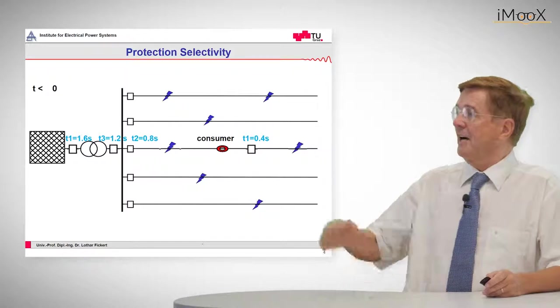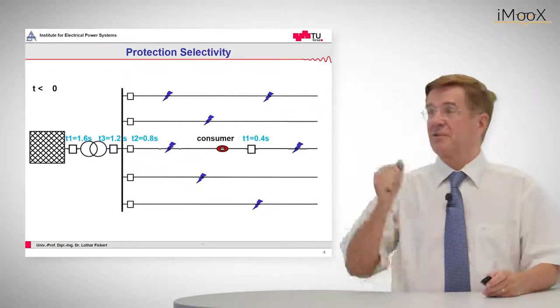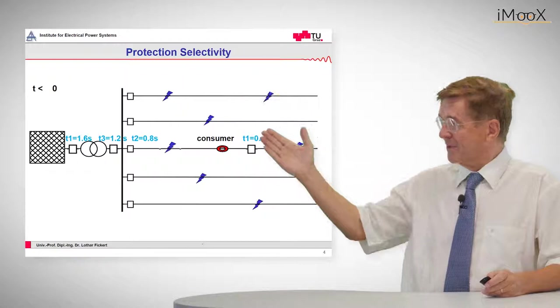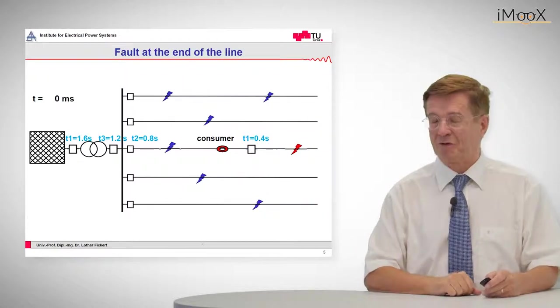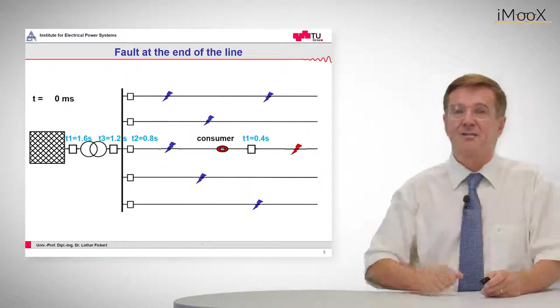Let's take our typical network which consists of a transformer, a busbar and a feeder which will have a fault. This fault is indicated by the red arrow.